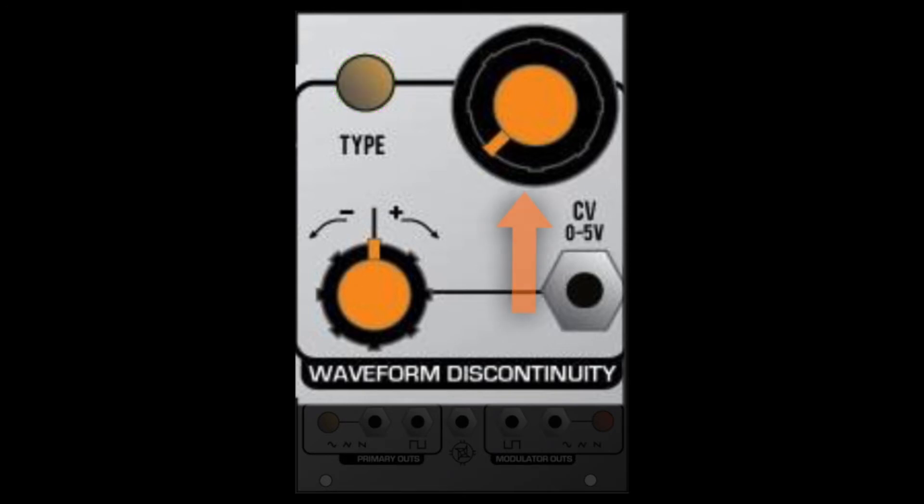The manual control on the right side adjusts the amount of wave-shaping that's applied to the primary oscillator, but it also controls the duty cycle of the primary oscillator square output.